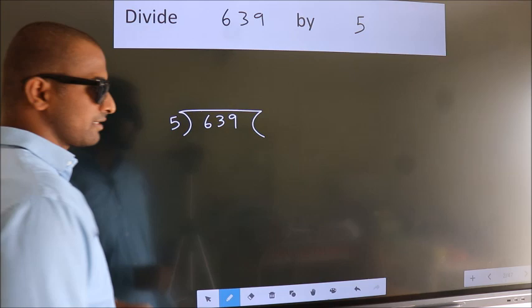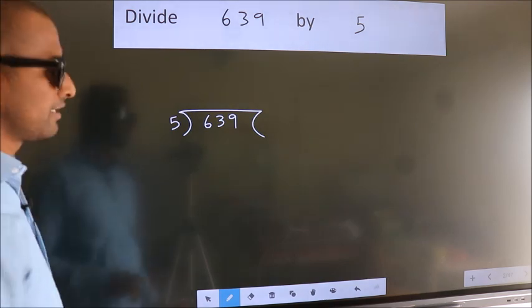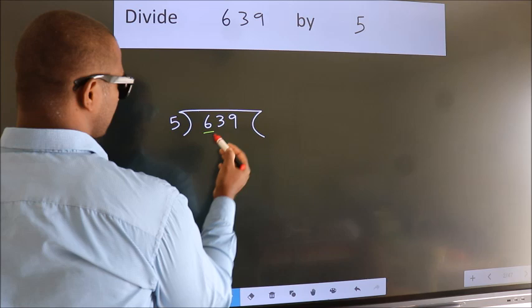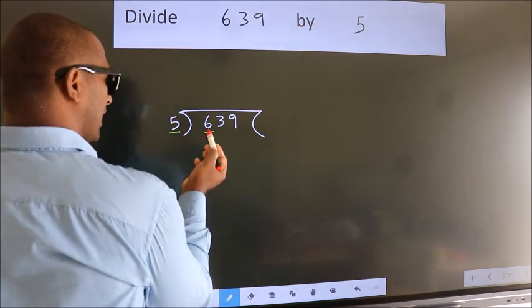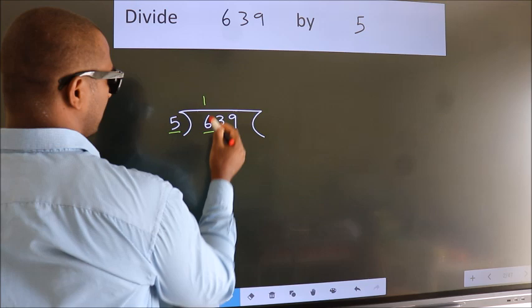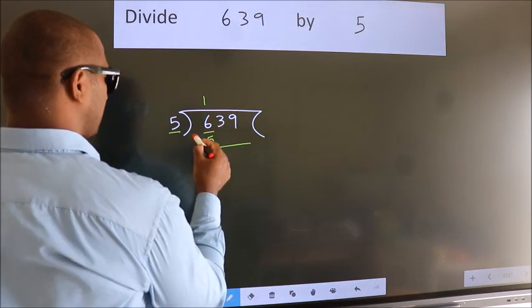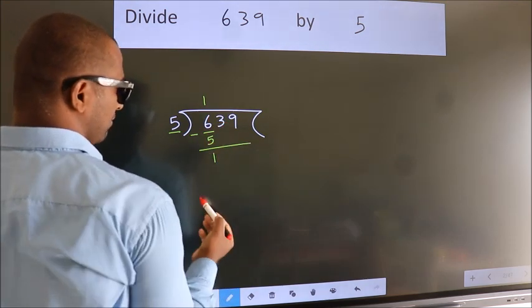This is your step 1. Next. Here we have 6. Here 5. A number close to 6 in 5 table is 5 once 5. Now we should subtract. We get 1.